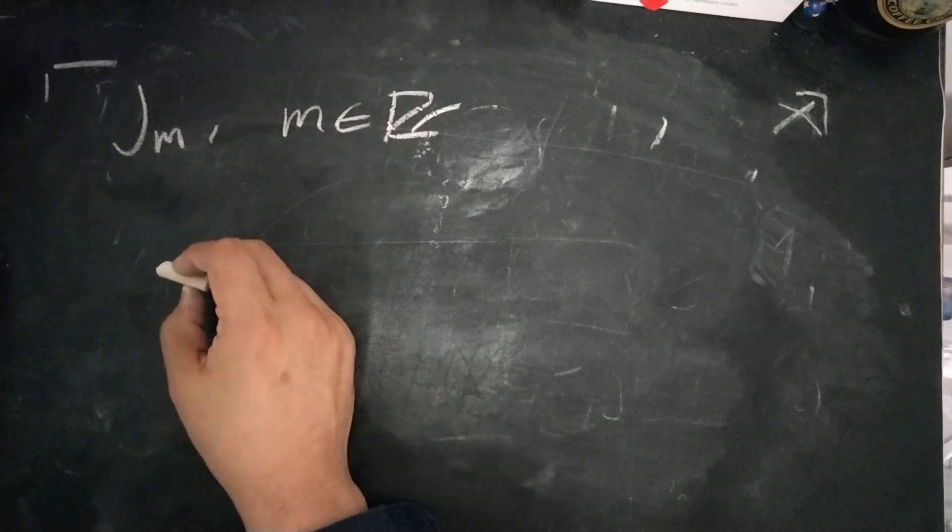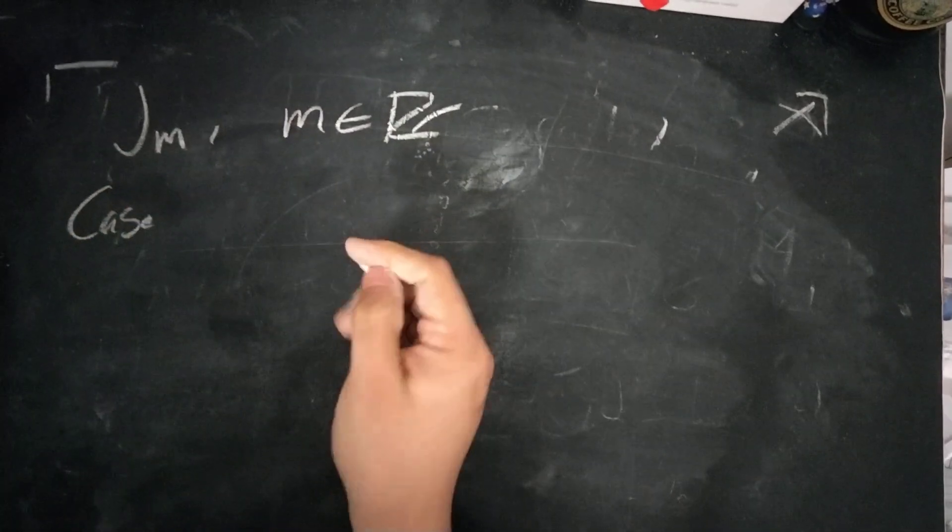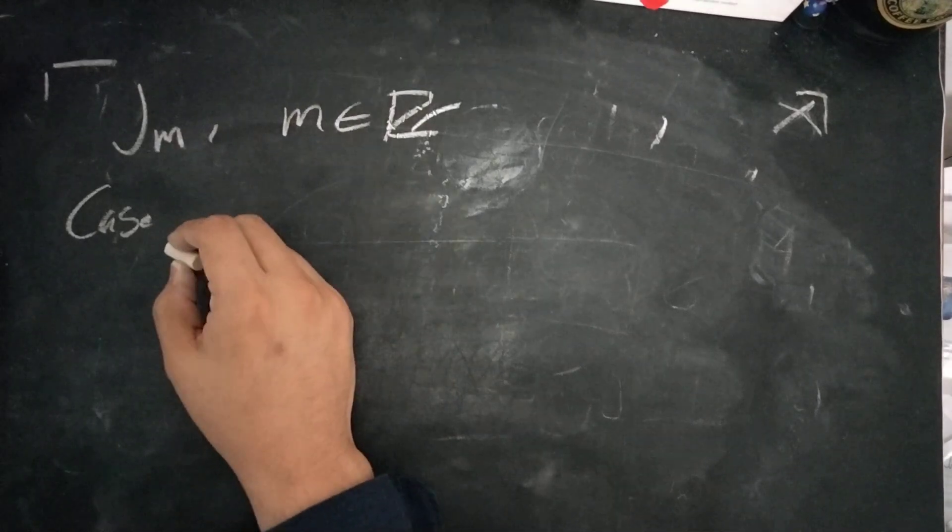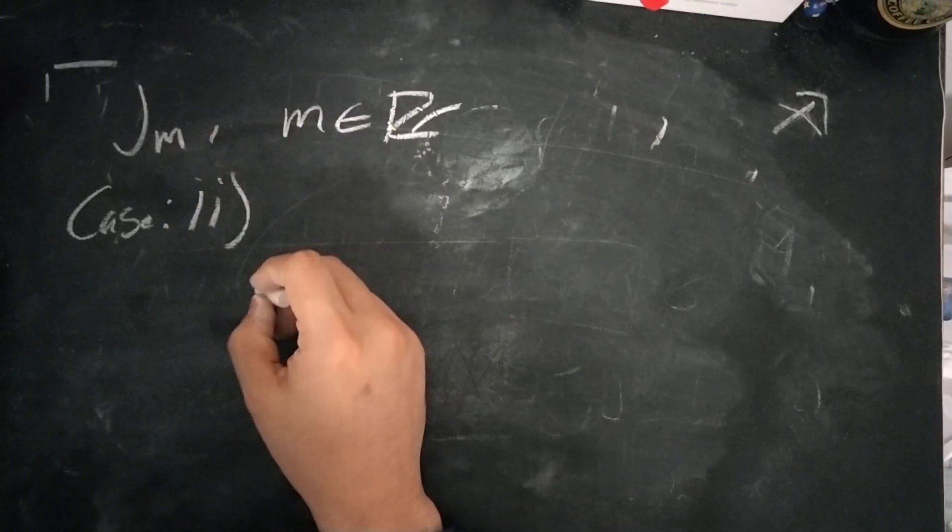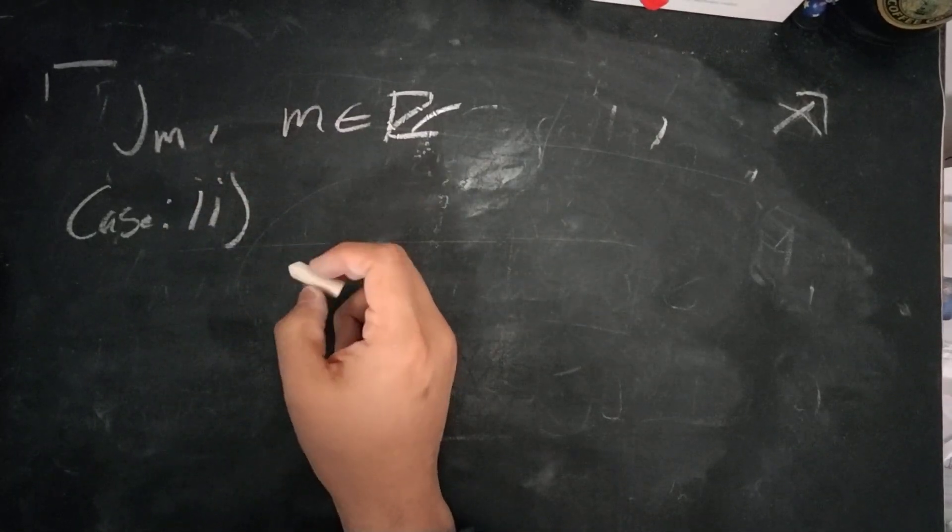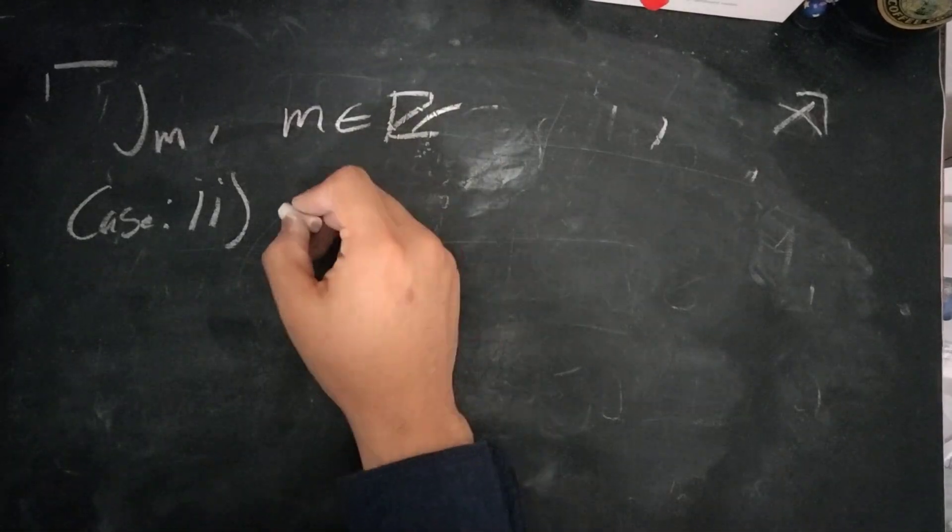So first, we'll break this down into cases, one for each of the cases we're trying to show. So first, I'm going to show the second case, that is that if n is in J and r is an integer, then rn is in J_m.